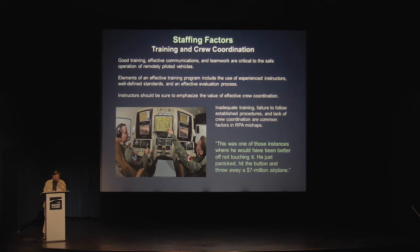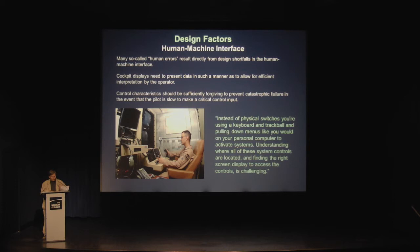Good training, effective communications, and teamwork are critical to the safe operation of remotely piloted vehicles. Elements of an effective training program include the use of experienced instructors, well-defined standards, and effective evaluation processes. Instructors should be sure to emphasize the value of effective crew coordination. Inadequate training, failure to follow established procedures, and lack of crew coordination are common factors in RPA mishaps. Many so-called human errors result directly from design shortfalls in the human-machine interface. Cockpit displays need to present data in such a manner as to allow for efficient interpretation by the operator. Control characteristics should be sufficiently forgiving to prevent catastrophic failure in the event that the pilot is slow to make a critical control input.